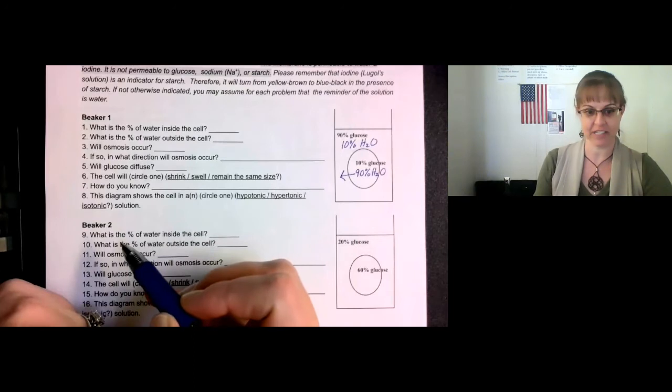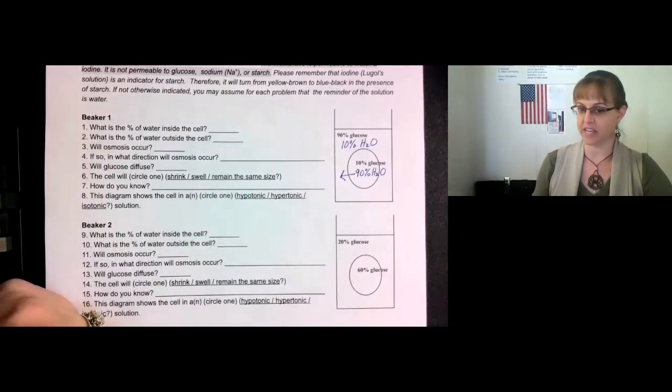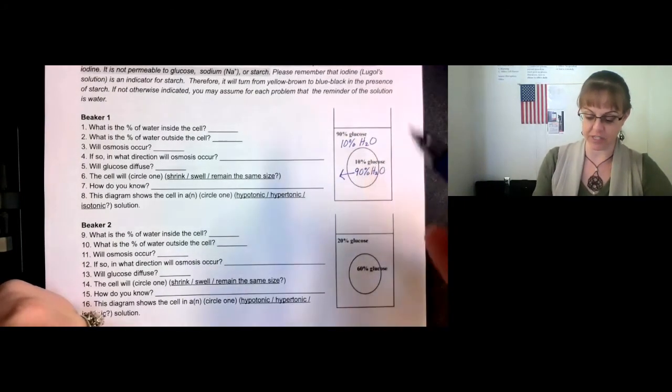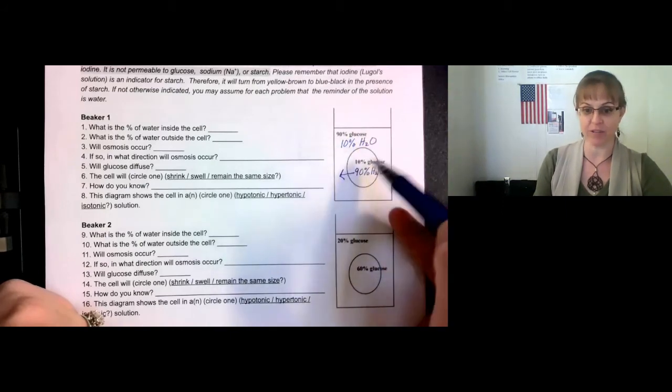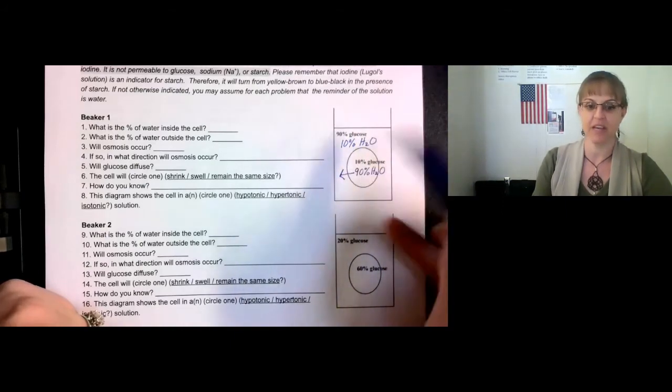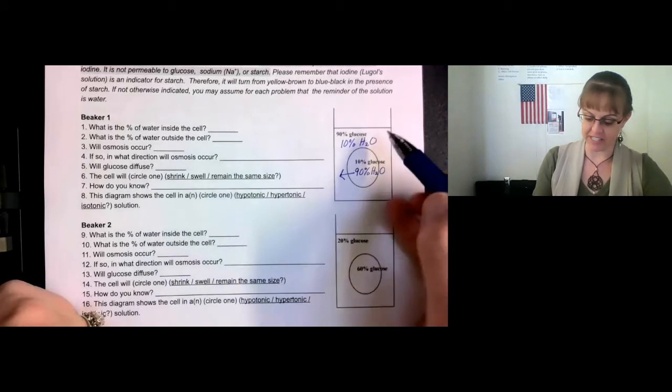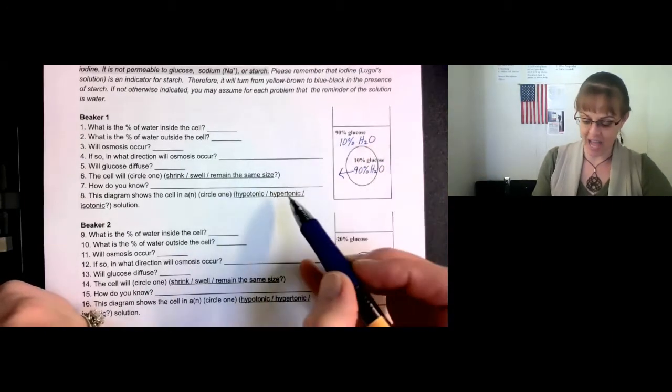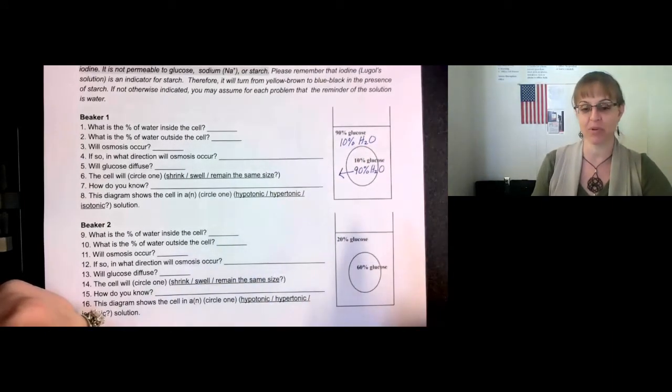This diagram shows a cell in a hypo, hyper, or isotonic solution. When you tell that, you don't look at the water, you look at the things that are dissolved. There's 90% glucose and 10% glucose. There's more glucose outside in the solution, so the cell is in a solution that is more concentrated with glucose. More is hyper, so this is hypertonic.